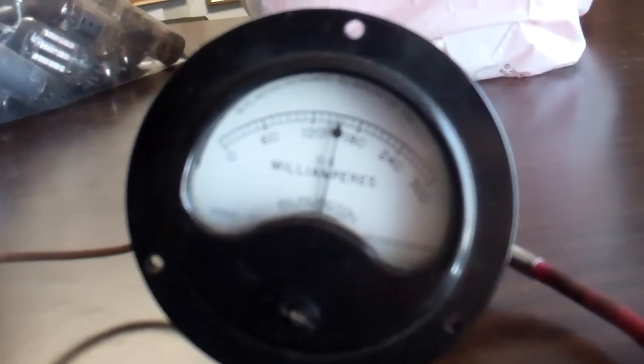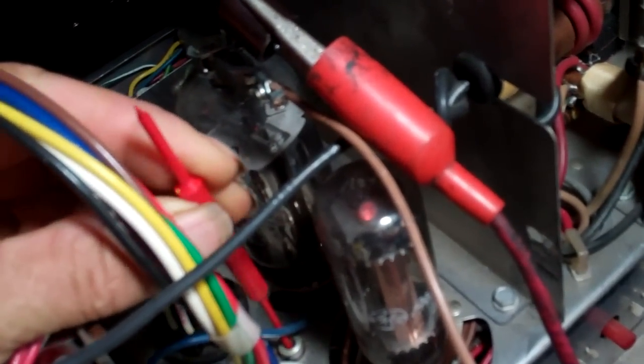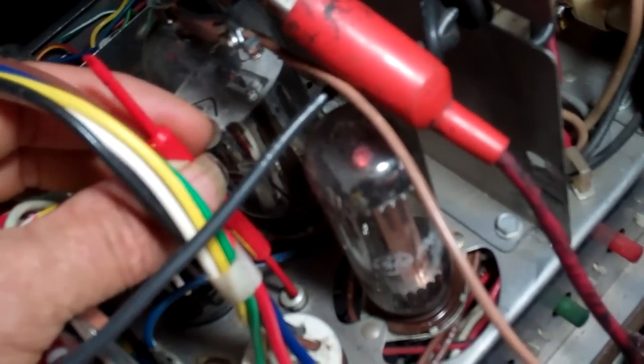So right there we're at about 160 milliamps, really, really low, but some of these later sets were really efficient. Okay, now what we want to do is twist this for minimum current on the meter. You can see it's going up in that direction, going down, now it's going back up. So we want to find the middle spot where it's the lowest, which is about where it was.